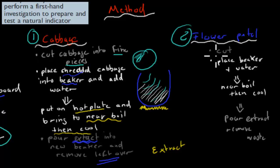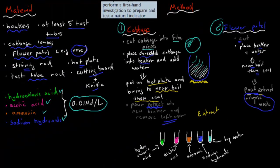We do exactly the same thing for the flower petals. First, cut the flowers into smaller bits. Then place the flowers in a beaker and add some water, just like we did with the other one. Then we bring it to that near boil and let it cool afterwards. Once we've done that, we remove the solution, which is what we want. That's our indicator. We remove the solution and put that into a new beaker. Now we have two extracts: the cabbage indicator and the petal indicator.